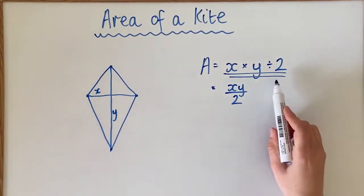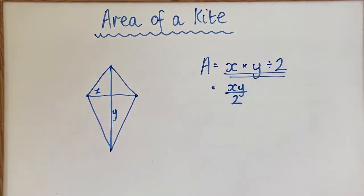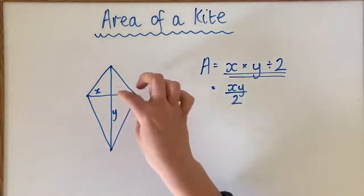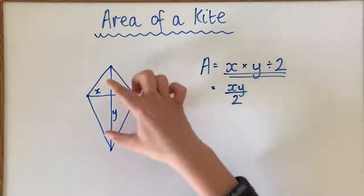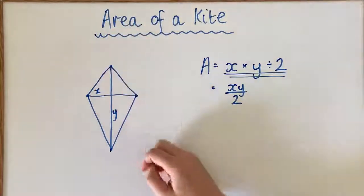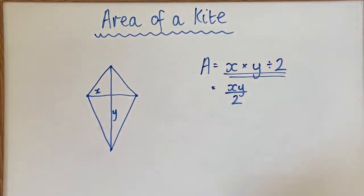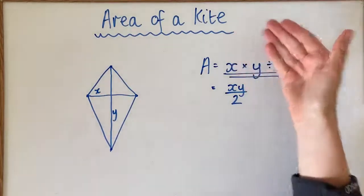Now, the reason it's divided by 2 is if you look at our other video on finding the area of a triangle, this essentially is a combination of triangles, whether it's two large triangles, this one and this one, or this one and this one, or four small triangles. So with a triangle, we always remember that we have to halve that. That's a little tip to remember that with a kite, you need to halve it.